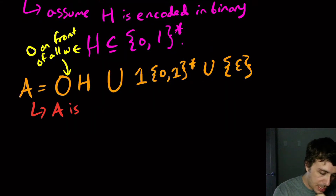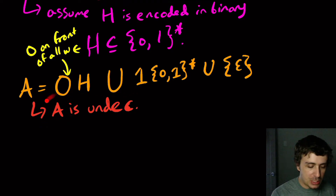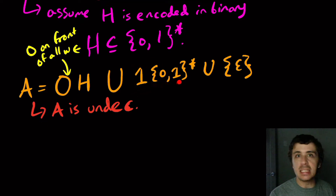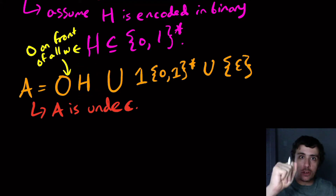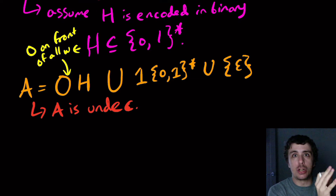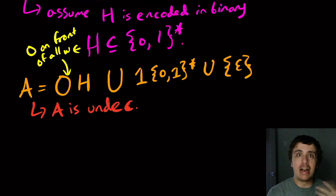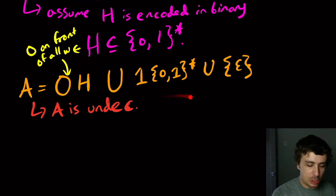I'm going to claim that A is undecidable. The reason is: if a supposed decider for A gets a string that starts with one, we immediately say yes, because all strings starting with one are in A. If the string starts with a zero, take away that first character — that's equivalent to solving the halting problem on the remaining string. We need to figure out whether that Turing machine halts on that input. So A is undecidable because deciding it is equivalent to deciding the halting problem; it's just encoded slightly differently.